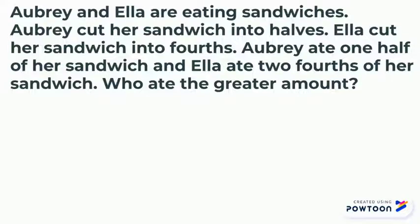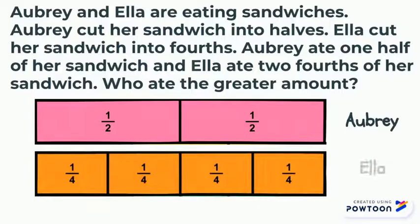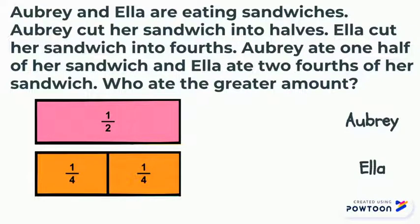In the story, it says that Aubrey cut her sandwich into halves, so we will use the half pieces to represent her sandwich. And Ella cut her sandwich into fourths, so we will use the fourths to represent her sandwich. It says that Aubrey ate one half of her sandwich — to represent this, I will take away one half fraction bar. It then says that Ella ate two-fourths of hers, so I will then take away two-fourths fraction bars to represent this.